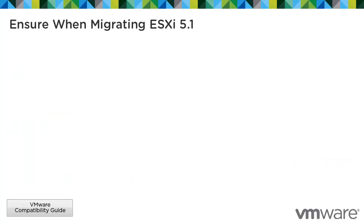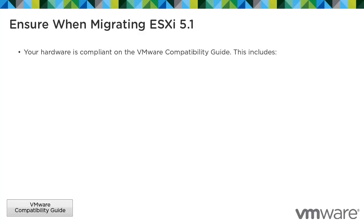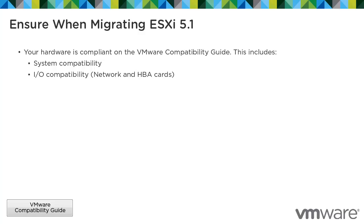When migrating to ESXi 5.1, ensure that your hardware is compliant on the VMware Compatibility Guide. This includes system compatibility, I/O compatibility, storage compatibility, and backup software compatibility.